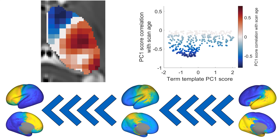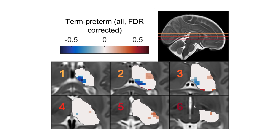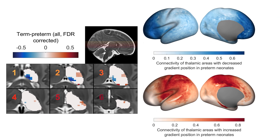One final thing we wished to know is: does preterm birth disrupt the formation of this gradient? Looking at neonates born preterm but scanned at term with a set of matched controls, we can see differences in the thalamic gradient in medial, ventrolateral, and ventroposterior areas. The cortical projection pattern of these thalamic areas shows they are connected to frontal, somatosensory, and insular regions — all areas which have previously been found to show abnormalities in preterm infants. Potentially, preterm birth is disrupting the sequential formation of this axis, but overall the patterning of thalamocortical connectivity remains largely intact.